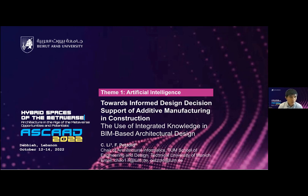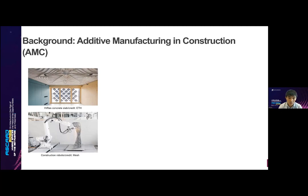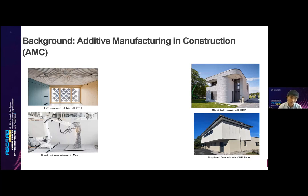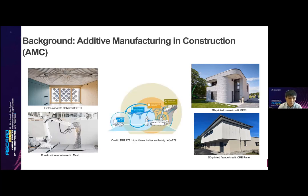In recent years, there have been many practices for additive manufacturing in construction. For instance, the high-res slab produced by ETH series claims that it saves approximately 70% of material compared to the conventional casting method. The Mesh company is able to manufacture freeform reinforcement structures with robotic arms. The first 3D printed residential building in Germany was finished last summer.